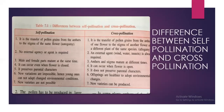Differences between self-pollination and cross-pollination: Self-pollination is the transfer of pollen grains from the anthers to the stigma of the same flower, whereas cross-pollination is the transfer of pollen from the anther of one flower to the stigma of another flower of a different plant of the same species. In self-pollination, no external agent is required, but in cross-pollination, an external agent is always required. In self-pollination, male and female parts mature at the same time; in cross-pollination, they mature at different times. Self-pollination can occur even when the flower is closed, but cross-pollination occurs only when the flower is open. In self-pollination, parental characters are preserved; in cross-pollination, they are not.